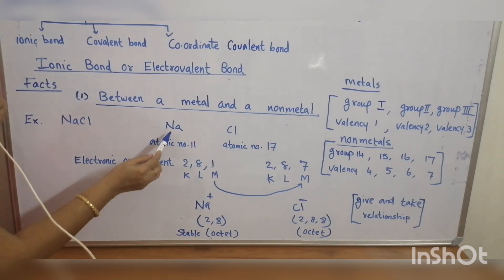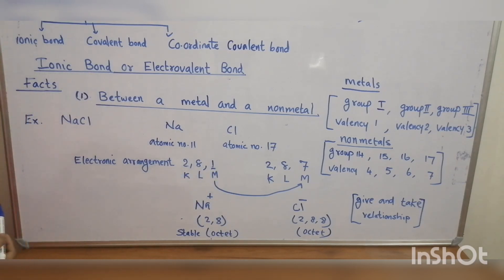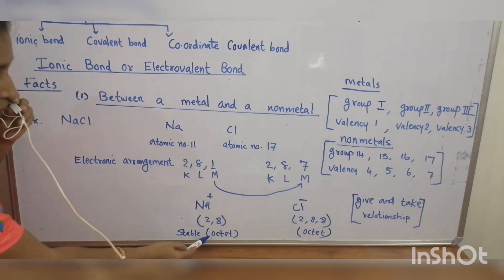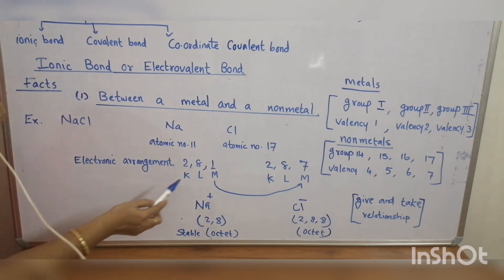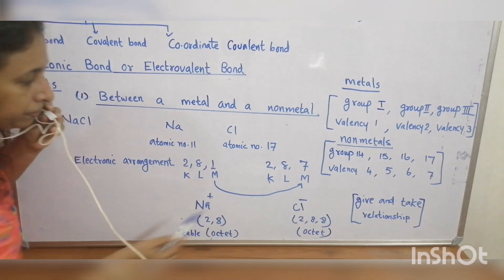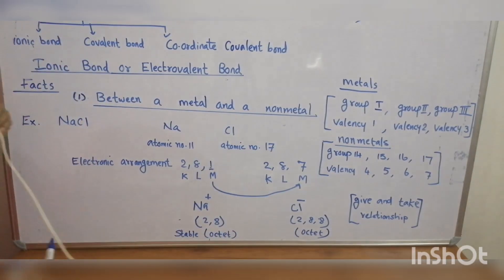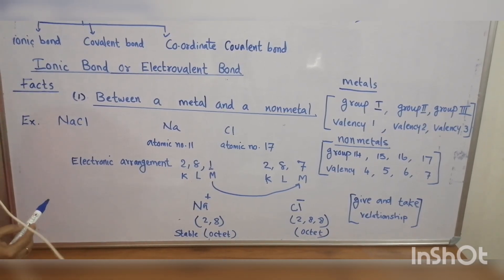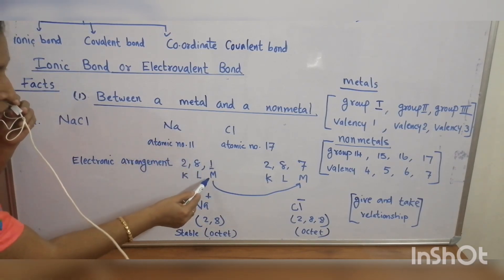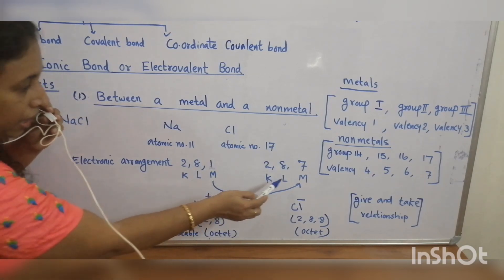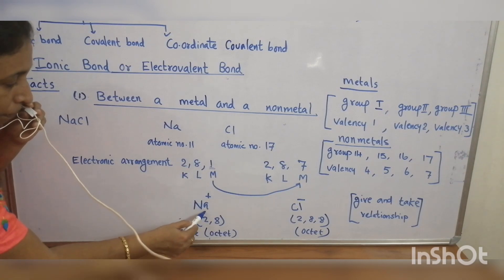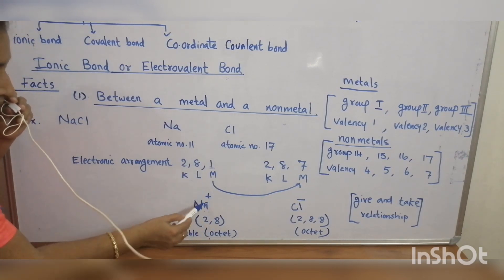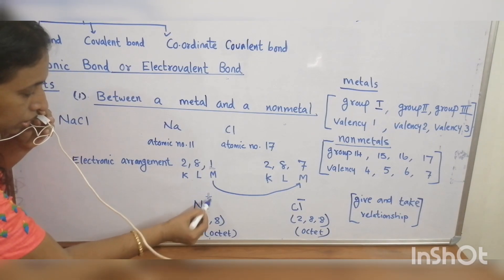If sodium loses 1 electron in the outermost shell, it attains 8 electrons in the outermost shell and attains noble gas configuration — it becomes stable. There is only 1 possibility: if sodium loses its outermost electron and chlorine gains that electron, both are mutually benefited. Sodium is converted to sodium plus ion — a sodium cation. If an atom loses an electron, it is converted to a positively charged cation.